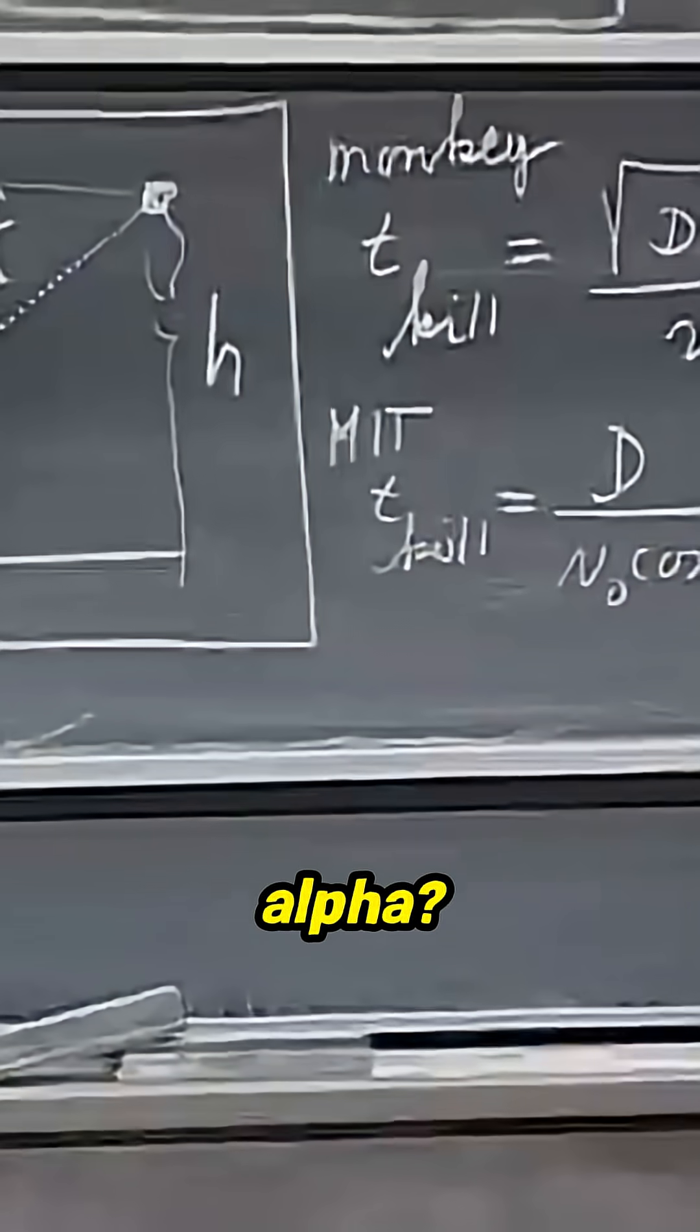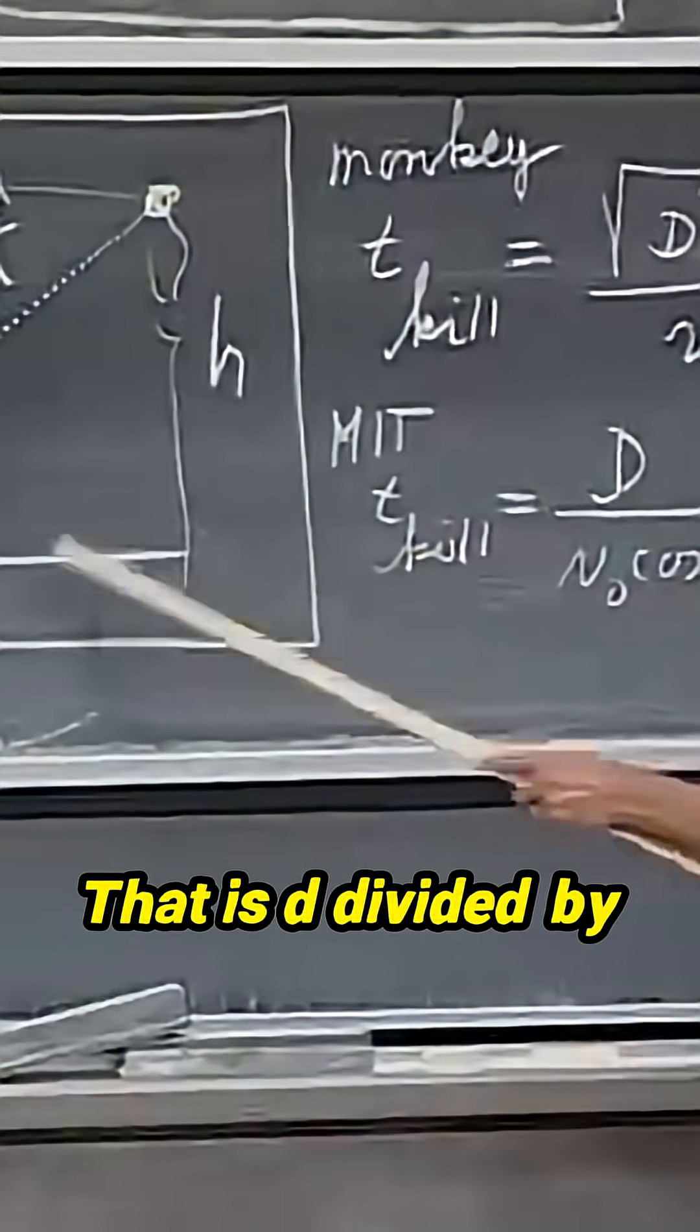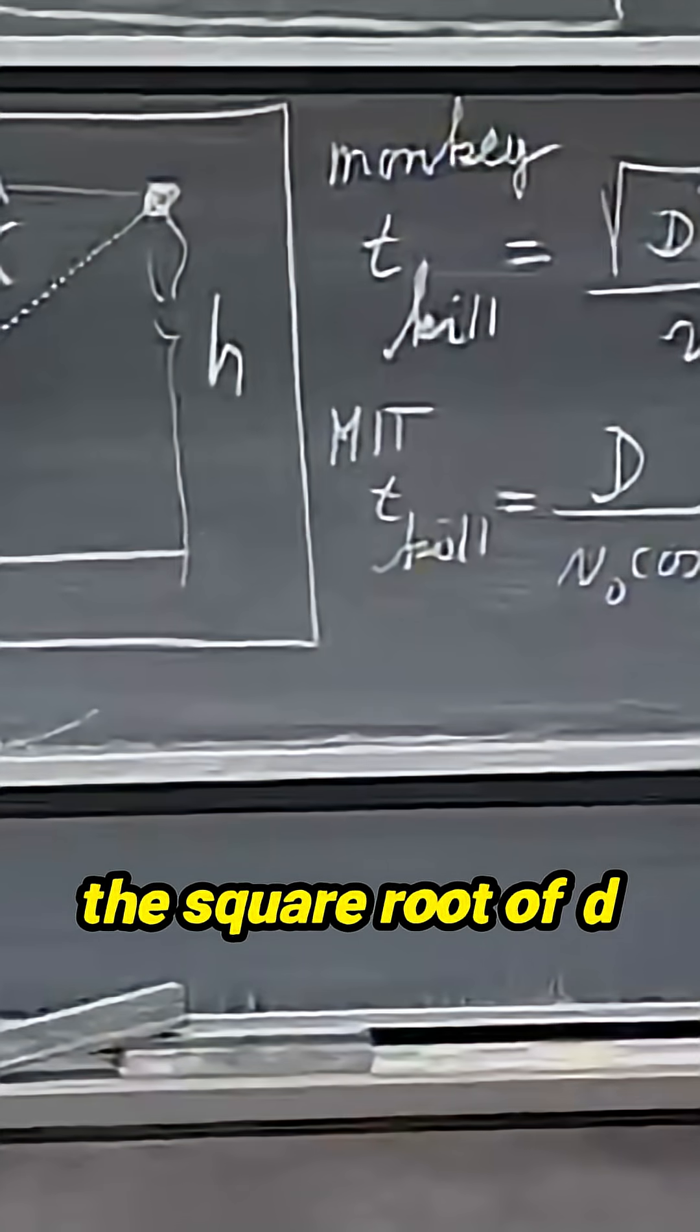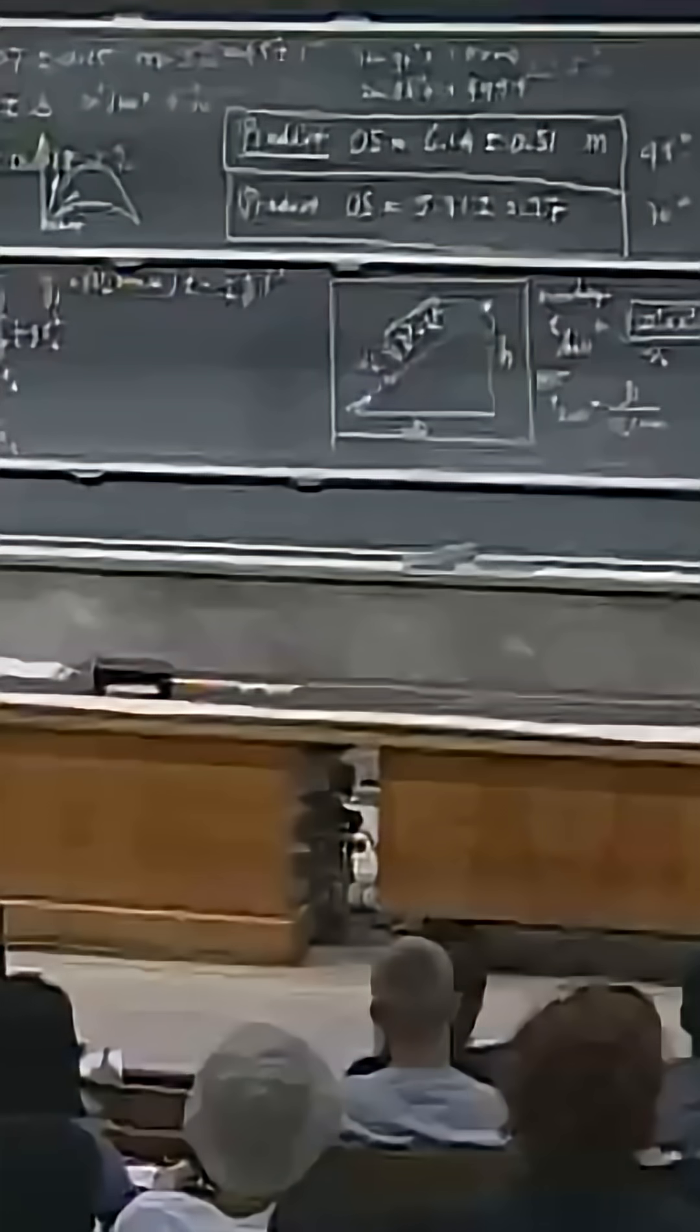But what is the cosine of alpha? That is d divided by the square root of d squared plus h squared.